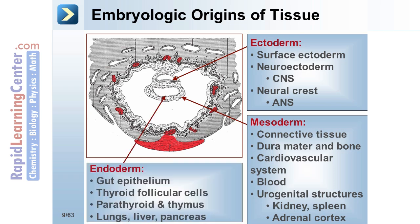The endoderm gives rise to the formation of gut epithelium and its derivatives such as thyroid follicular cells, the parathyroid and thymus, and the lungs, liver, and pancreas.